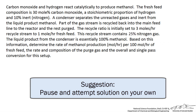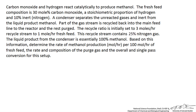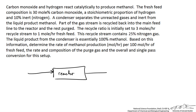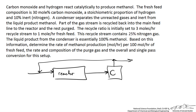We should start by drawing a picture and then labeling all streams with known information and unknown variables. We have a fresh feed coming into our reactor. Out of the reactor it enters a condenser. Out of the condenser we have a gas stream that is split — part is recycled back to the fresh feed and the other part is purged out of the process. We also have a liquid product stream that comes out of the condenser.